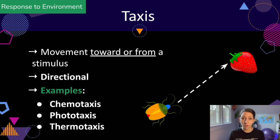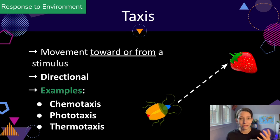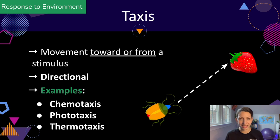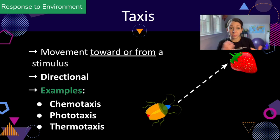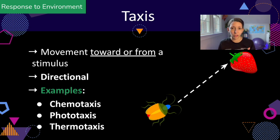Taxis is a movement toward or away from a particular stimulus — a lot of times it's light or a food source, and it is directional. In any type of taxis, whether it's chemotaxis, phototaxis, or thermotaxis, the organism is either moving toward that stimulus or away from it. A lot of prokaryotic organisms will have chemotaxis, so these bacteria can move toward a particular chemical stimulus. You might have seen this in an experiment with fruit flies, for example, if you soaked a cotton ball in a particular sugar.